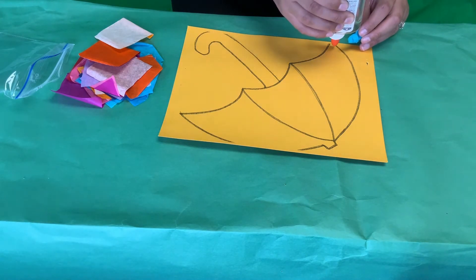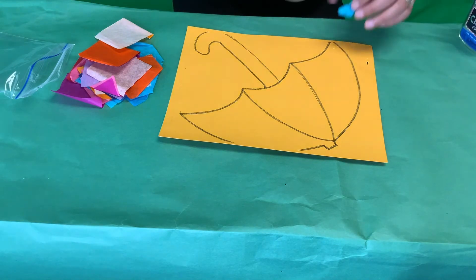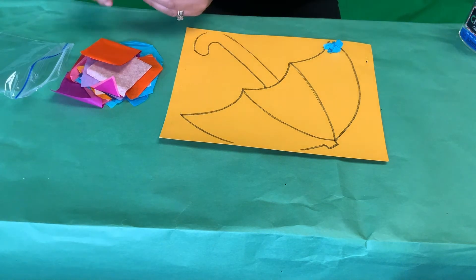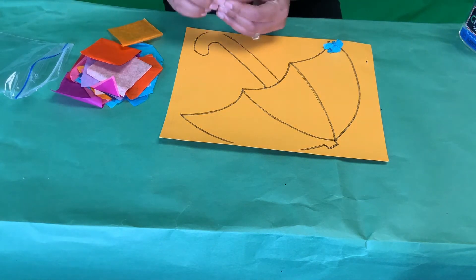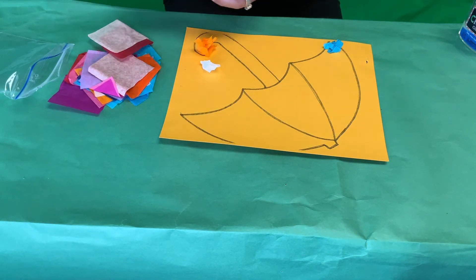You're going to glue it however you like. If it's easier for you to do it one by one or you can crumble your tissue paper, a lot of them and then glue it down. It's up to you the way you want to do it.